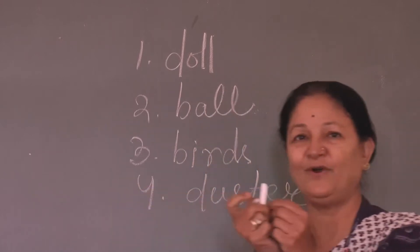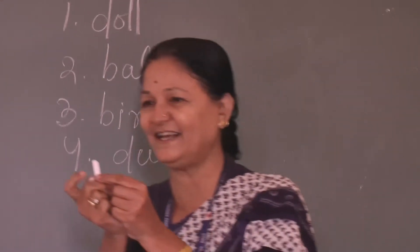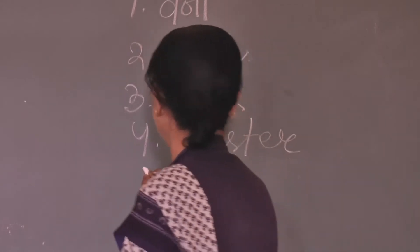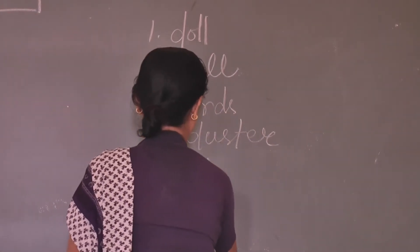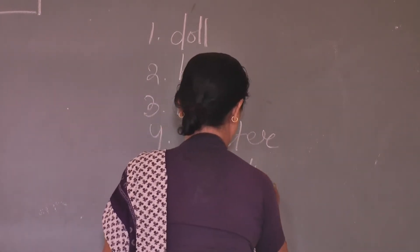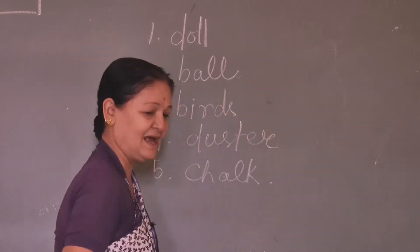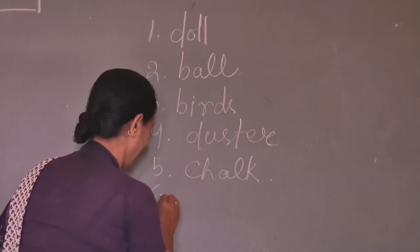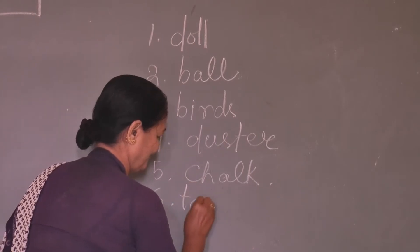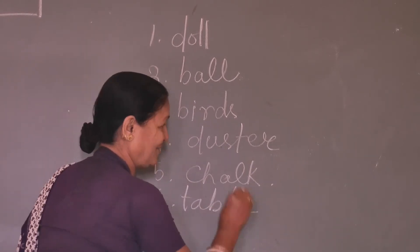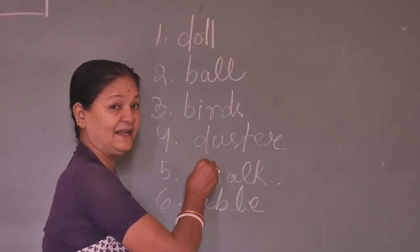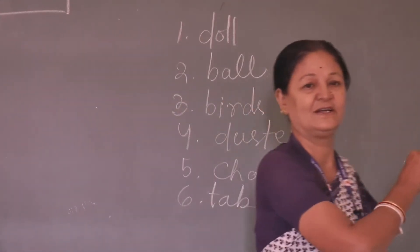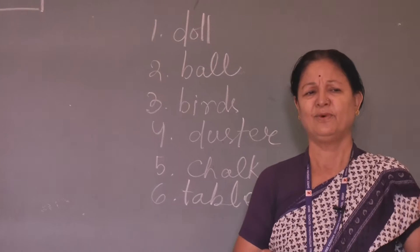This I am holding also — what is this? This is chalk. Write down chalk. And this is also table. Write correctly, see the spelling and write it properly. I will check your copies.